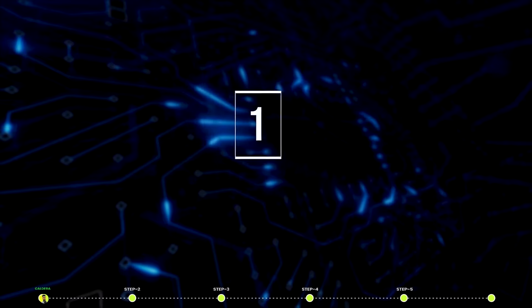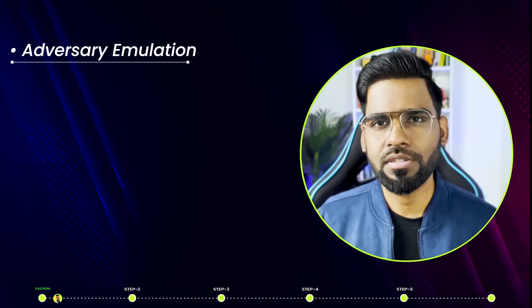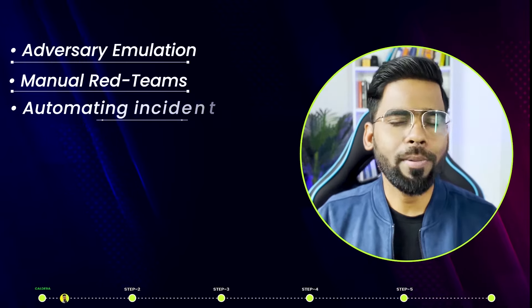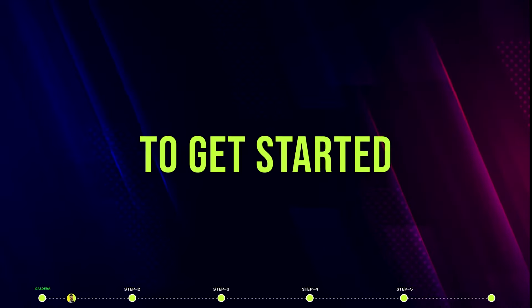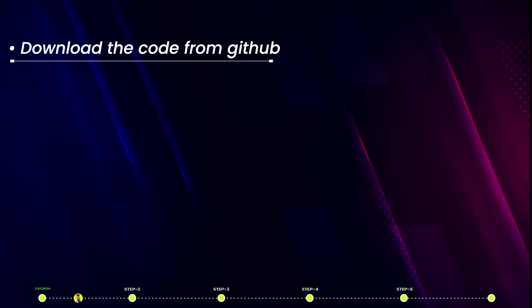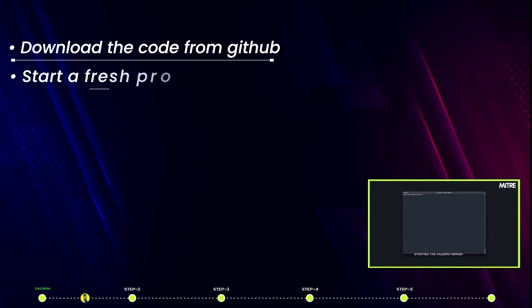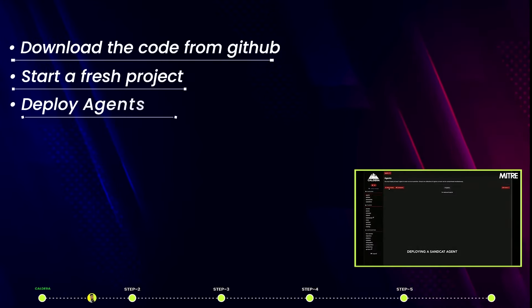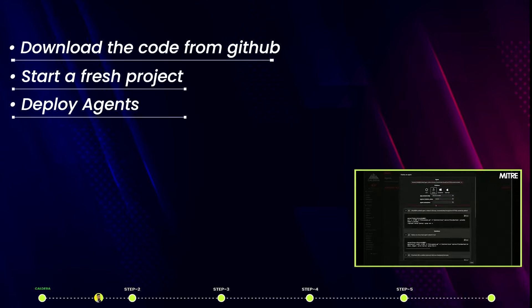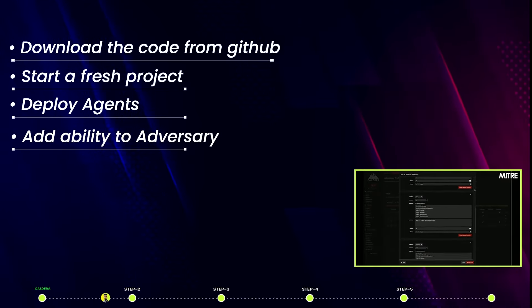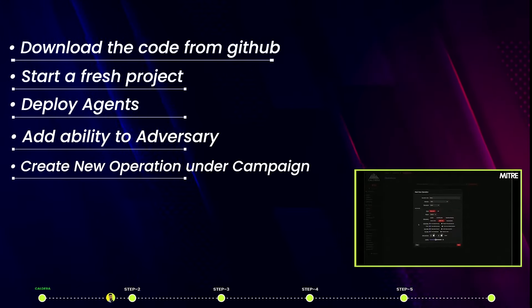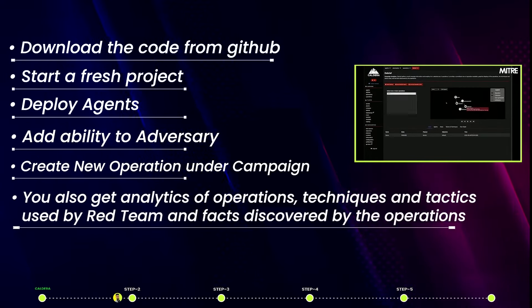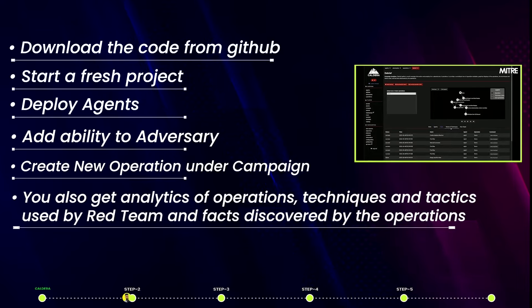Let's get hands-on with MITRE ATT&CK. We'll talk about five tools based on the framework. Number one: Caldera. This is an open-source tool for adversary simulation, manual red teaming, and automatic incident response. To get started, download the code from GitHub — link is in the description. Start a fresh project, deploy agents for Linux, Windows, or macOS, add abilities to adversaries, and create new operations under a campaign.